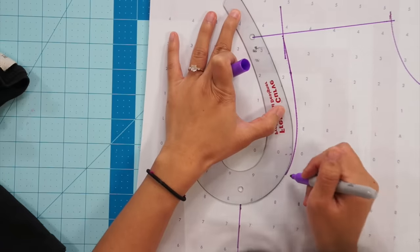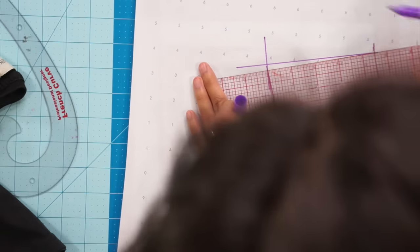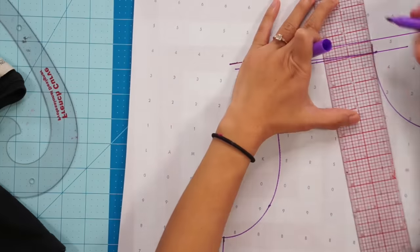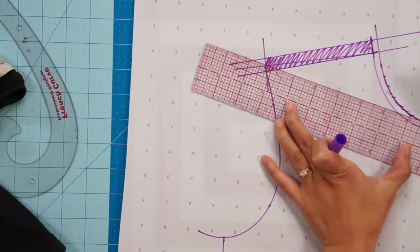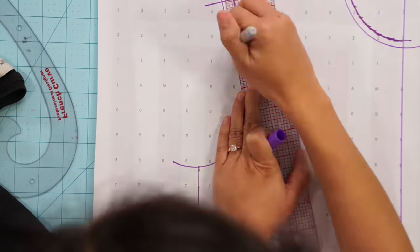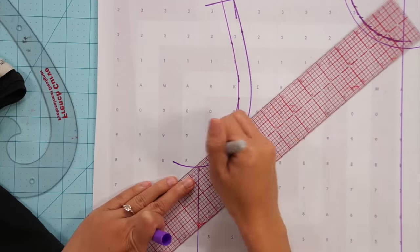The process just repeats. Mark along the dotted lines and add your seam allowance. Next the t-shirt sleeve is pretty simple.